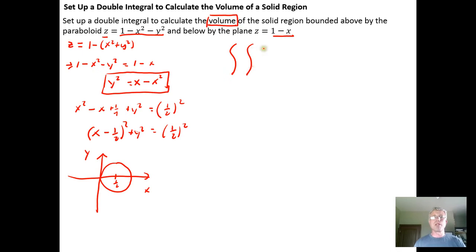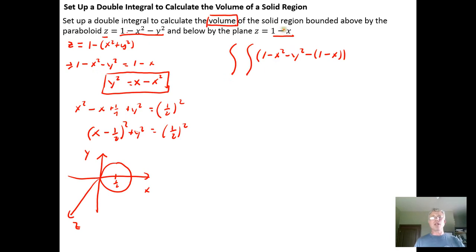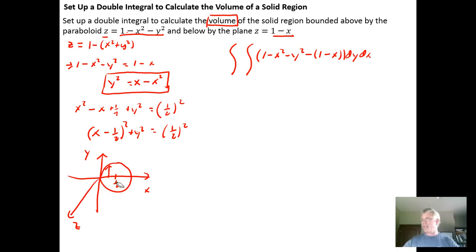The double integral will be the upper surface (1 minus x squared minus y squared) minus the lower surface (1 minus x), times dy dx. Because both equations have xz-plane symmetry, I want to integrate with respect to dy first. By taking advantage of this symmetry, I can integrate over the upper half of the circle rather than using a square root on the lower bound, which simplifies things significantly.